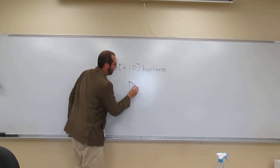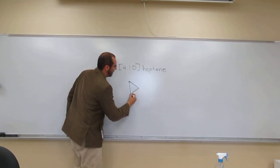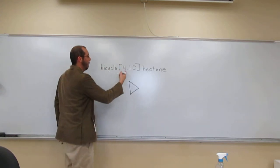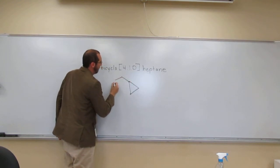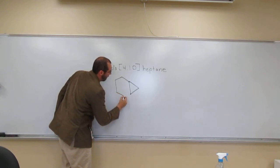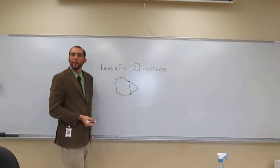One, right, so there's one carbon between the two bridgeheads like that. And then four, so between the two bridgeheads, one, two, three, four, and then we have that.